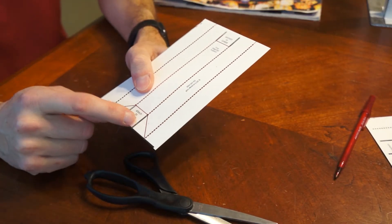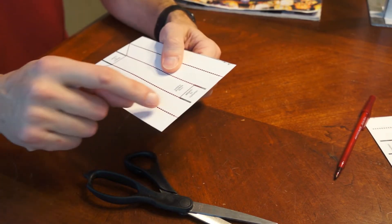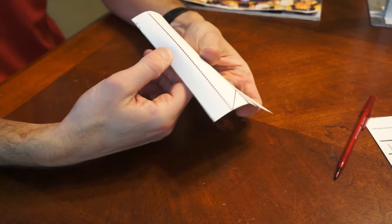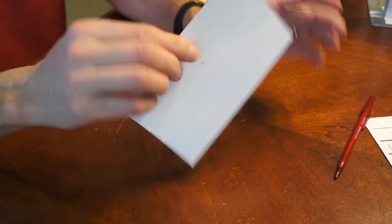Next step is to cut along these solid black lines. There's two on each end. Next step is to make mountain folds along all the long dotted lines.